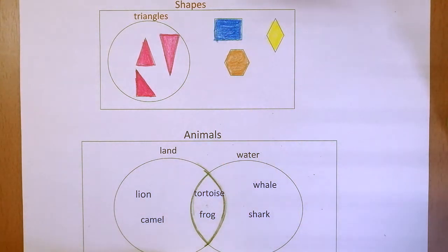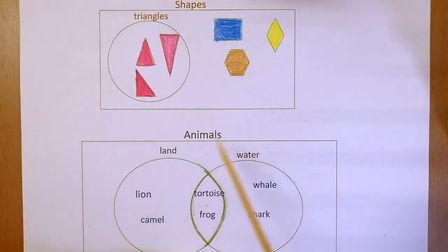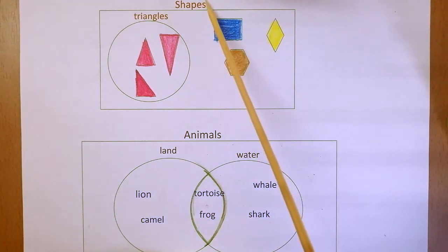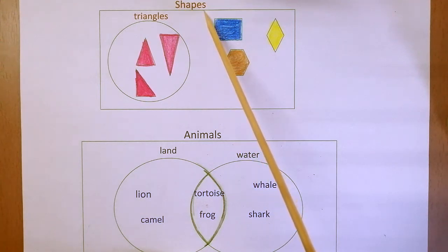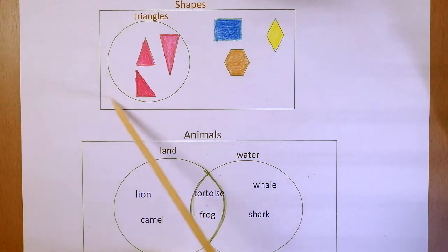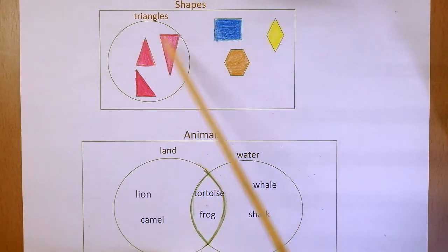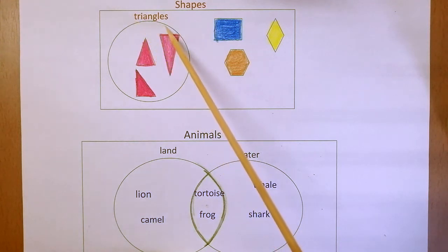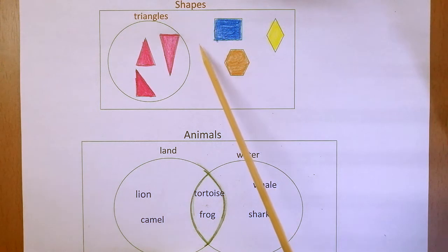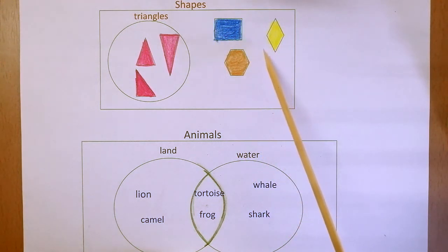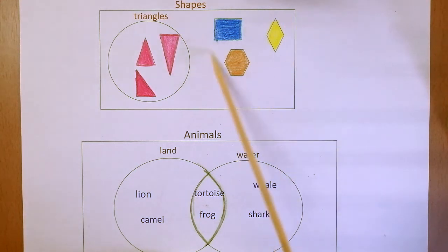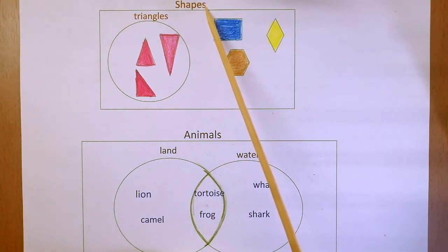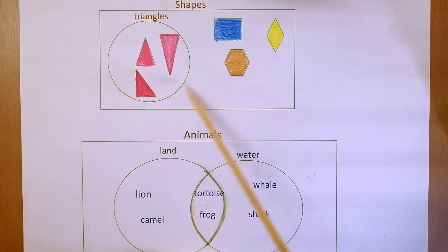We use rectangles and circles to represent information in the Venn diagram. Let's look at some Venn diagrams in detail. There are two Venn diagrams here. The first one is titled 'Shapes.' Inside the rectangular box there are many shapes, but we have put a circle around the triangles and grouped them, labeling that group as 'triangles.' The other shapes remain outside the circle, so here we have used one sorting rule to represent the information. The title appears at the top and the label identifies the group.